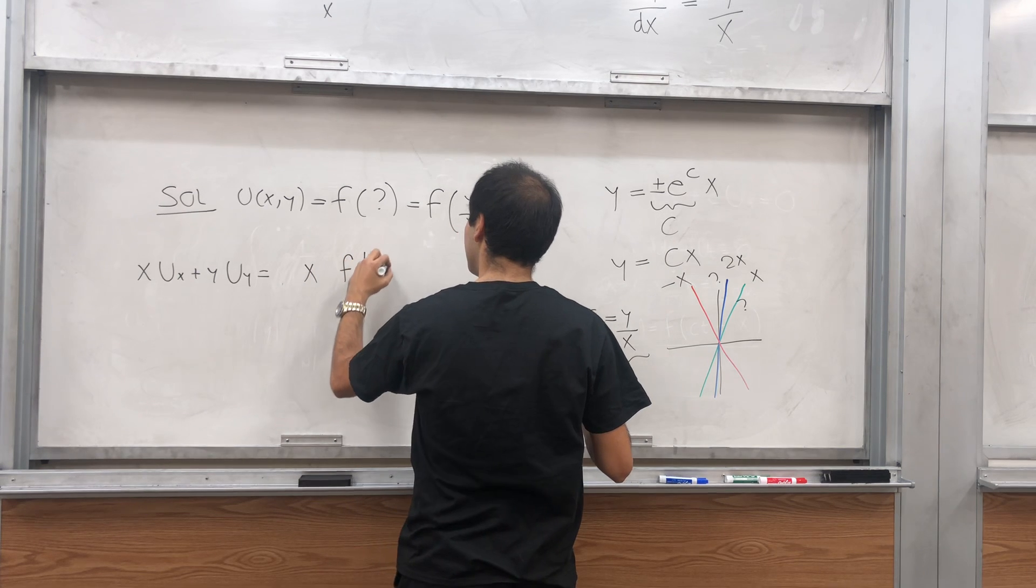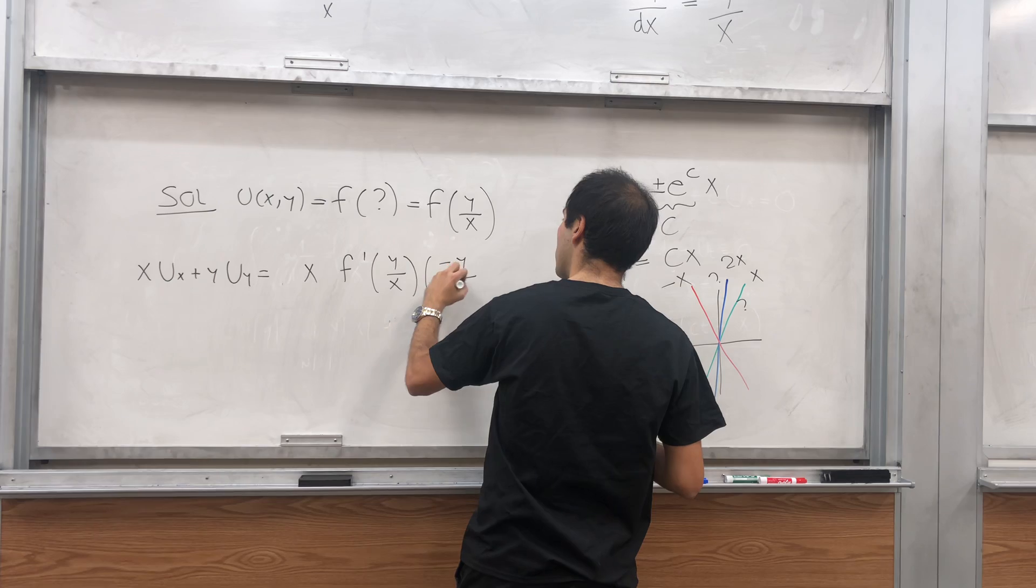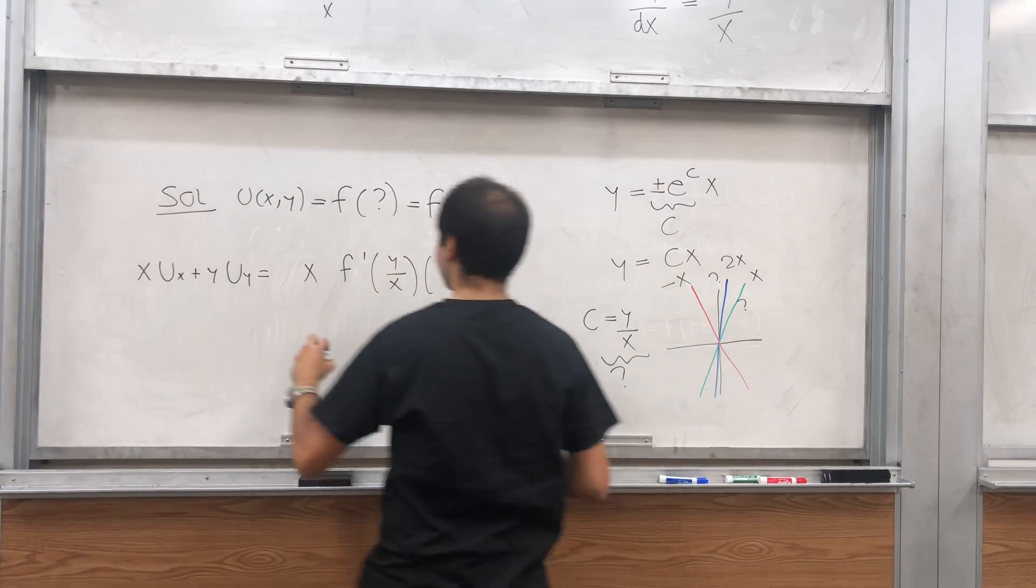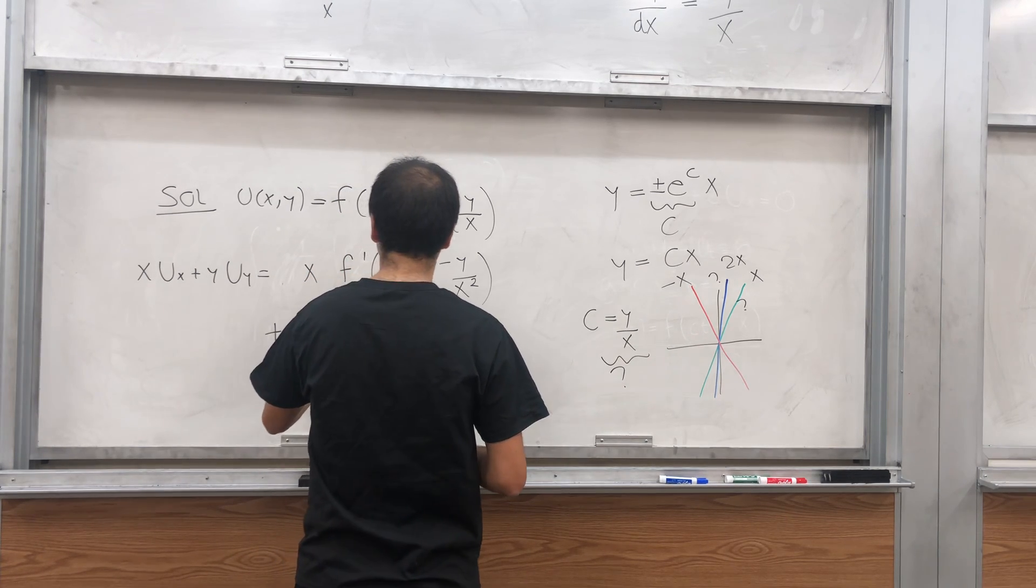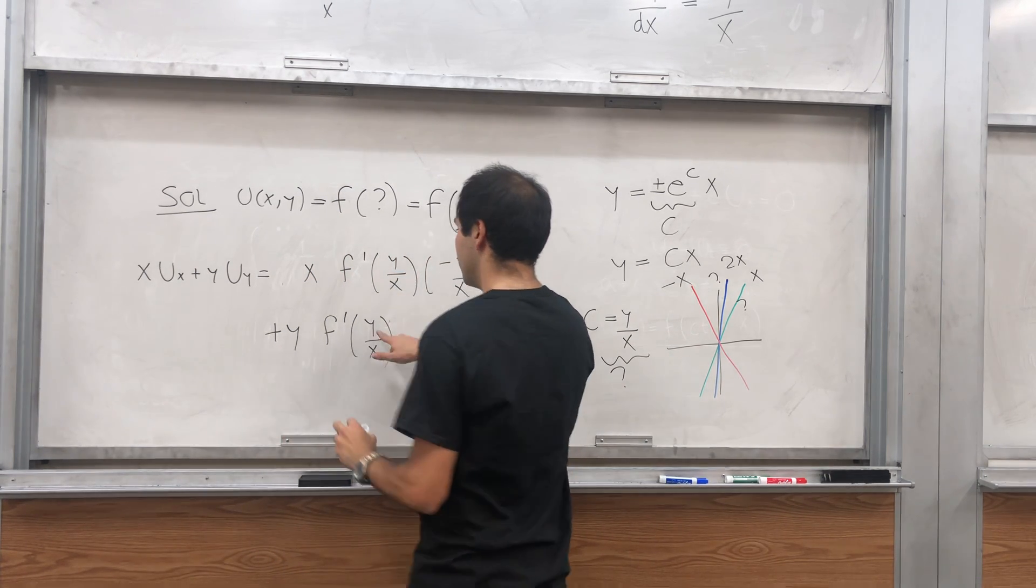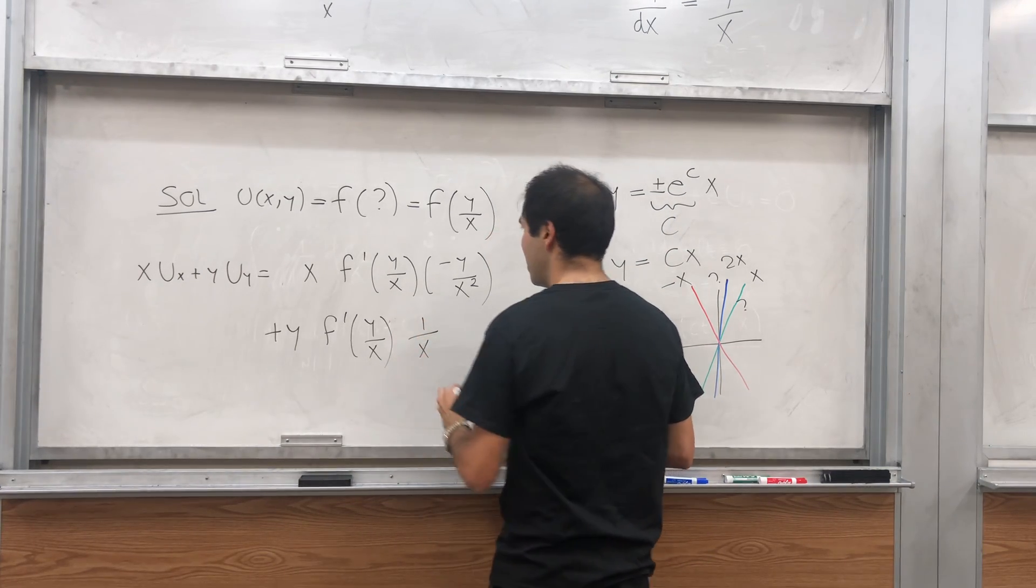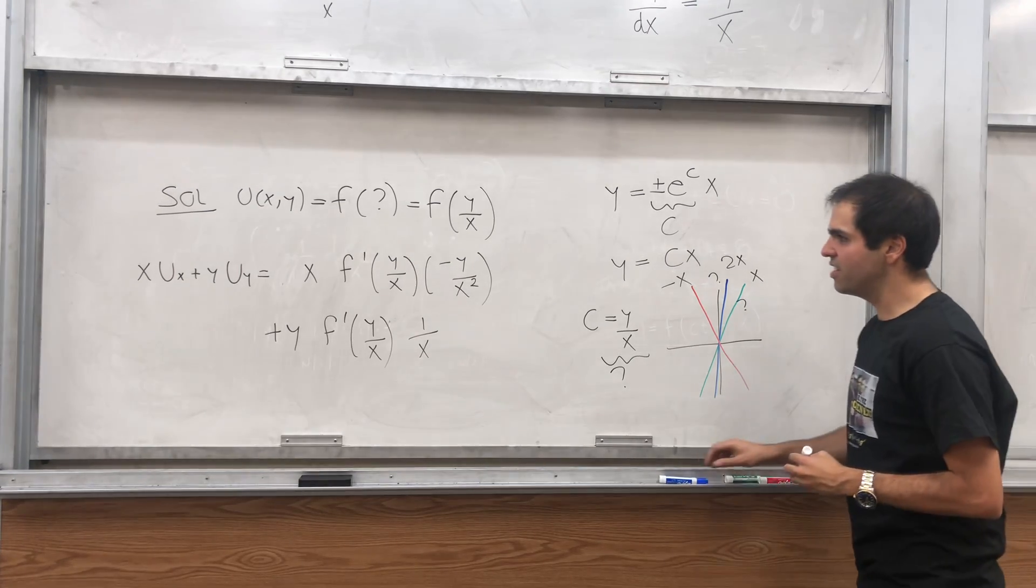And then minus y over x squared, because you're differentiating with respect to x, plus y f prime of y over x. Now, you're differentiating with respect to y, so 1 over x.